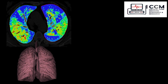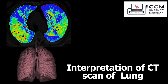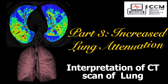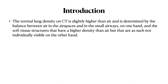Hello and welcome everyone to a third presentation on interpretation of CT scan of the lung. Today's topic is increased lung attenuation. The normal lung density on CT is slightly higher than that of air, determined by the balance between the air in air spaces and small airways on one hand, and the soft tissue structures that have higher density than air but are not individually visible on CT on the other hand.